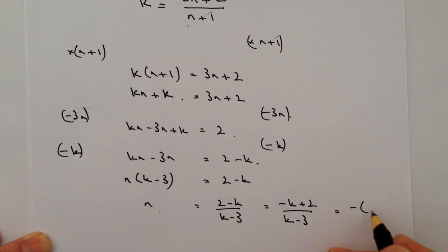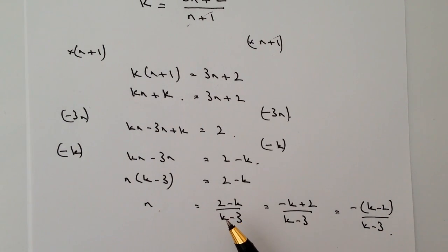Or you could write that as minus k minus 2 divided by k minus 3. Whichever way you wanted to, you wouldn't lose any marks whichever way you put this particular formula together. Providing all of those were exactly the same which they are at the moment.